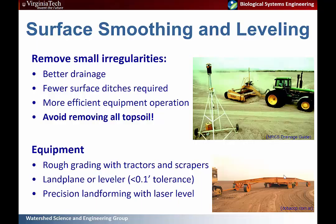Topsoil is very valuable so there are limits to how much smoothing can be done depending on how much soil would need to be removed. Equipment options range from rough grading with graders, tractors, and scrapers, to a land plane or leveler which can achieve precision down to about an inch and a half, and then precision land forming with a laser level where you can actually design your grade for the field and implement it.